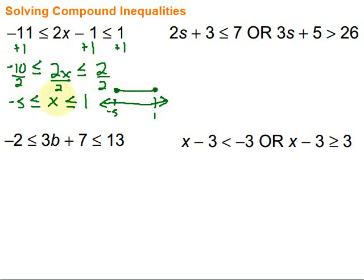Another way to look at this is to break it into two pieces, graph them individually, and in an AND situation, look for where the graphs overlap. I'll come back to show that. But first, let's look at the OR example over here. In an OR situation, we solve each of the inequalities separately.